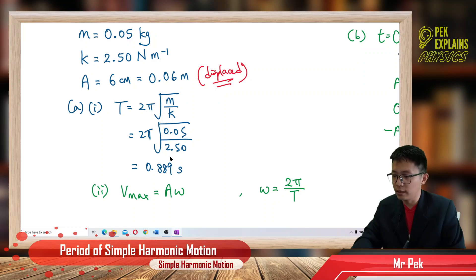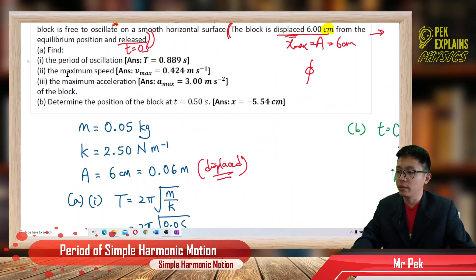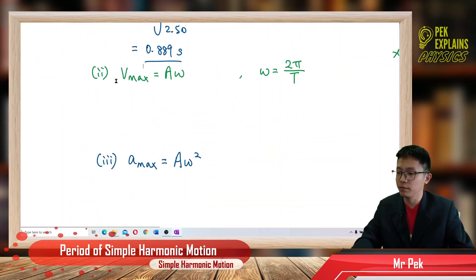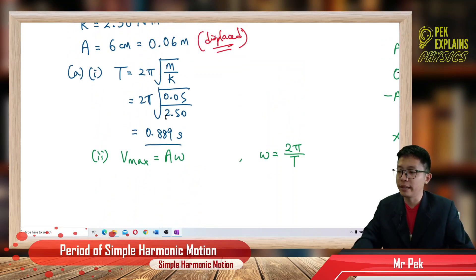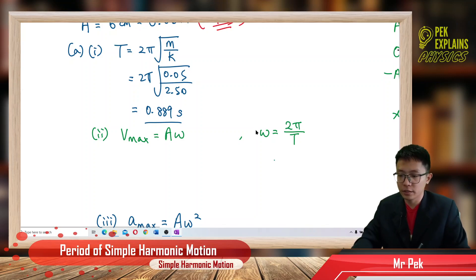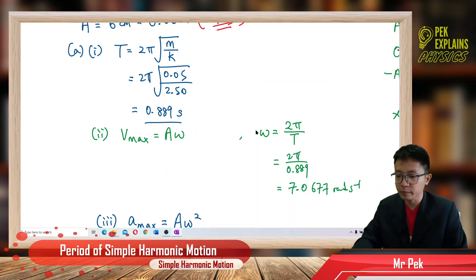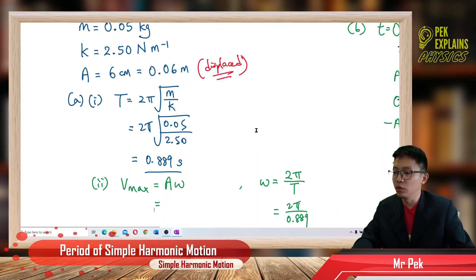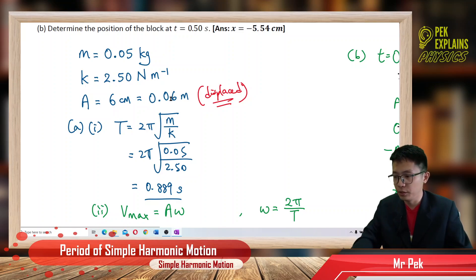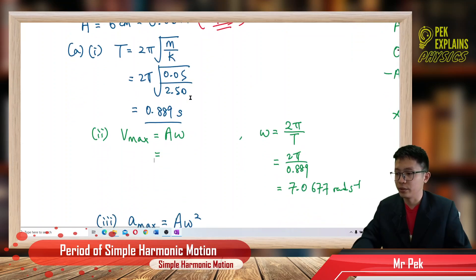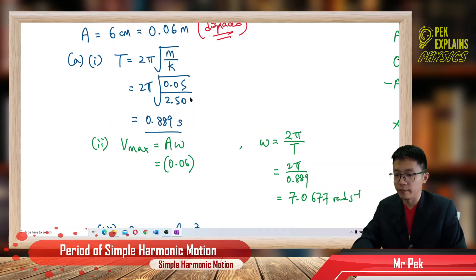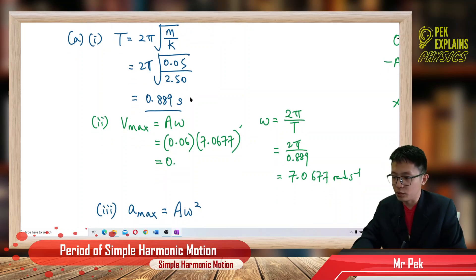Now, what is our maximum speed? The formula for maximum speed is v_max = Aω. We don't have omega yet, so we find it first: ω = 2π/T = 2π/0.889 = 7.0677 radians per second. Our amplitude is 0.06 meter (6 cm converted). So maximum speed = 0.06 × 7.0677 = 0.424 meters per second.